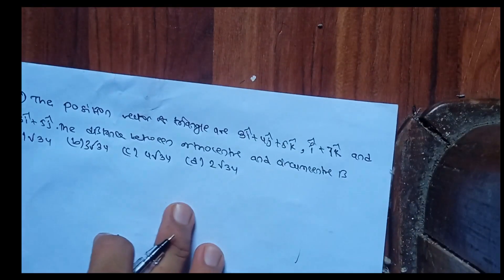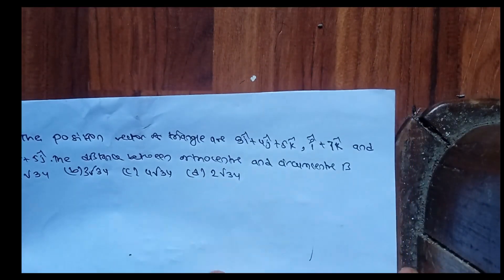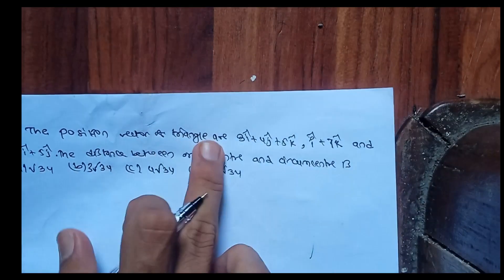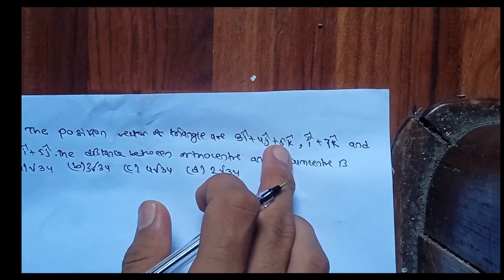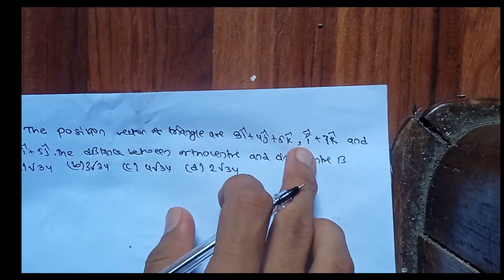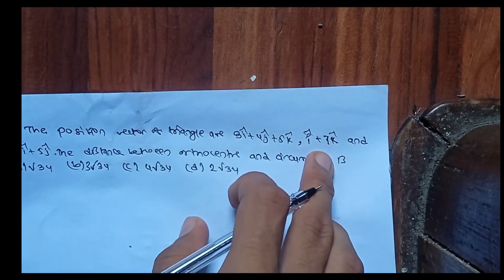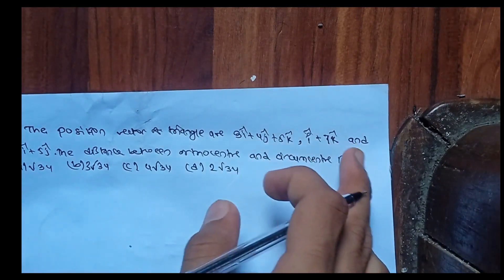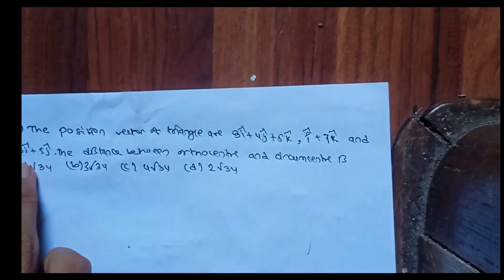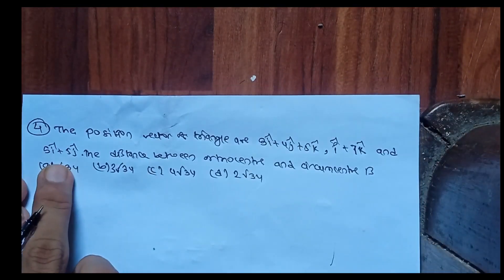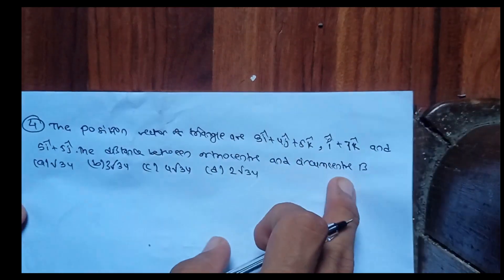Question number four: the position vectors of a triangle are given as 3i + 4j + 5k, i + j + k, i + 7k, and 5i + 5j. Find the distance between the orthocentre and circumcentre.